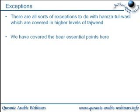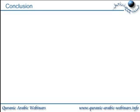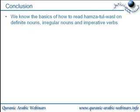We have covered the bare essential points — the absolute essentials — the major categories you would come across when reading. In conclusion, we know the basics of how to read Hamza tul wasal on definite nouns, obviously with the Al, the definite article. Irregular nouns — there were only a handful of them, which you can go back and write down from the slide. And we've covered the imperative verbs, including whether you read a kasra or a dhamma on top of the Hamza tul wasal.